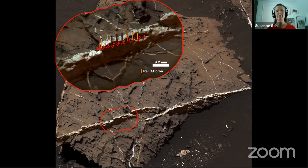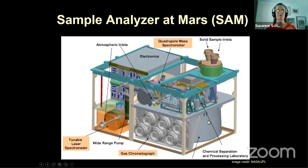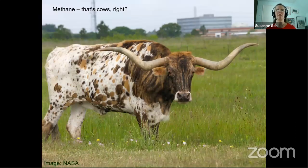Now the SAM instrument — one of the instruments in the rover belly. It takes in samples through sample inlets, or air inlets for the atmosphere, and measures gases. Rocks are dropped into an oven and heated to release gases. Whether gases came from the rock or the atmosphere, they are measured with a gas chromatograph and a tunable laser spectrometer. I'll focus on results from the tunable laser spectrometer because that's what made the big headlines — we found methane.